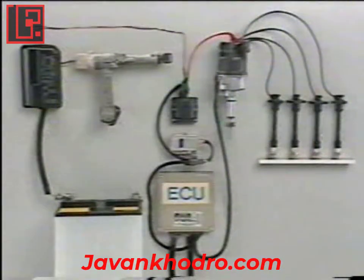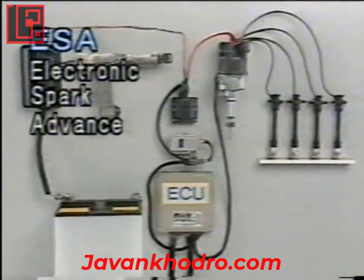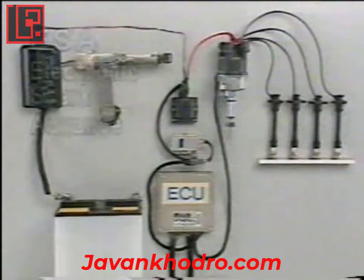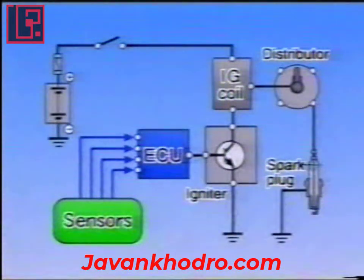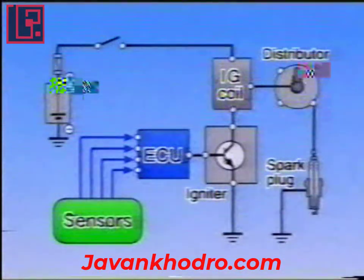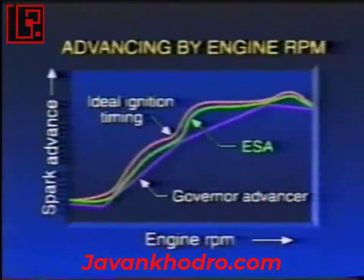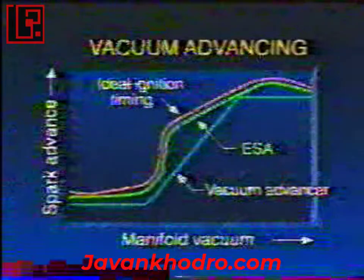Let's take a look at electronic spark advance, ESA. Instead of a mechanical advancer, an ECU or electronic control unit controls ignition timing in this system. This system senses engine conditions based on signals from various sensors. The ECU determines ignition timing and turns the primary current on and off. Conventional mechanical advancers could only control ignition timing in direct proportion to the engine speed and manifold vacuum. But using sensors and the ECU, ESA can achieve control closer to the ideal for the engine's running conditions.